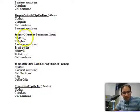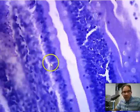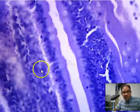You've got nucleus and cytoplasm. The basement membrane would be down here somewhere where the epithelium is connecting to deeper tissues.